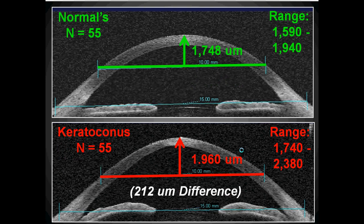Where were the eyes different? They were different in the cornea. 55 normal eyes measured, on average, 1,748 microns, whereas the keratoconic patients showed more sagittal depth at 1,960 microns.